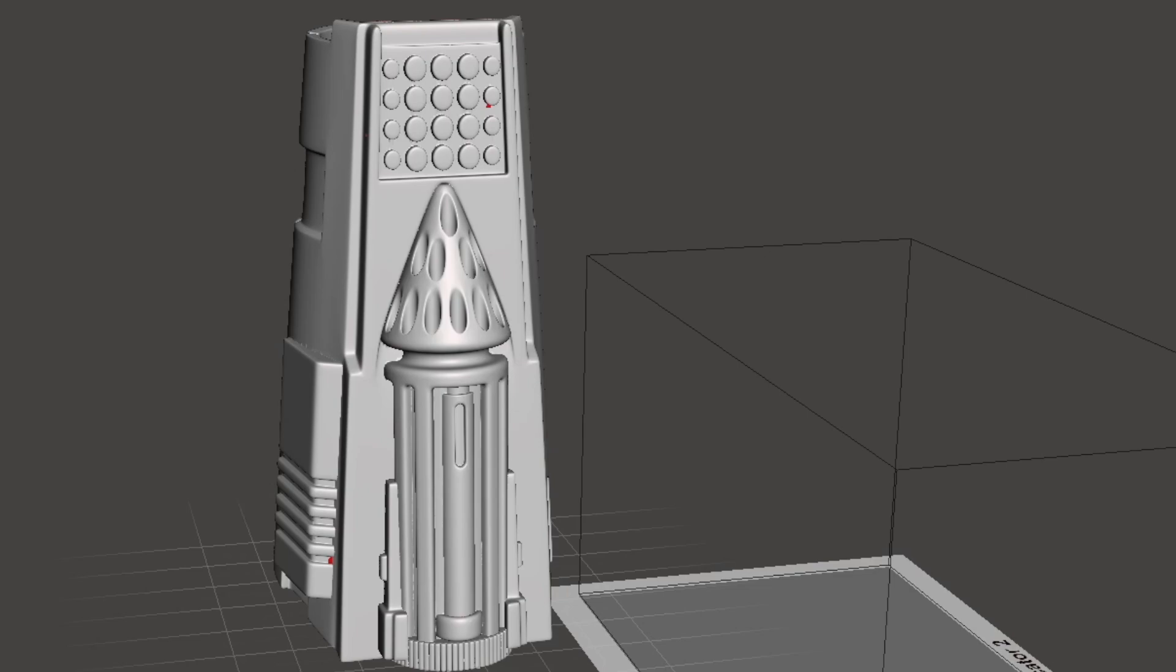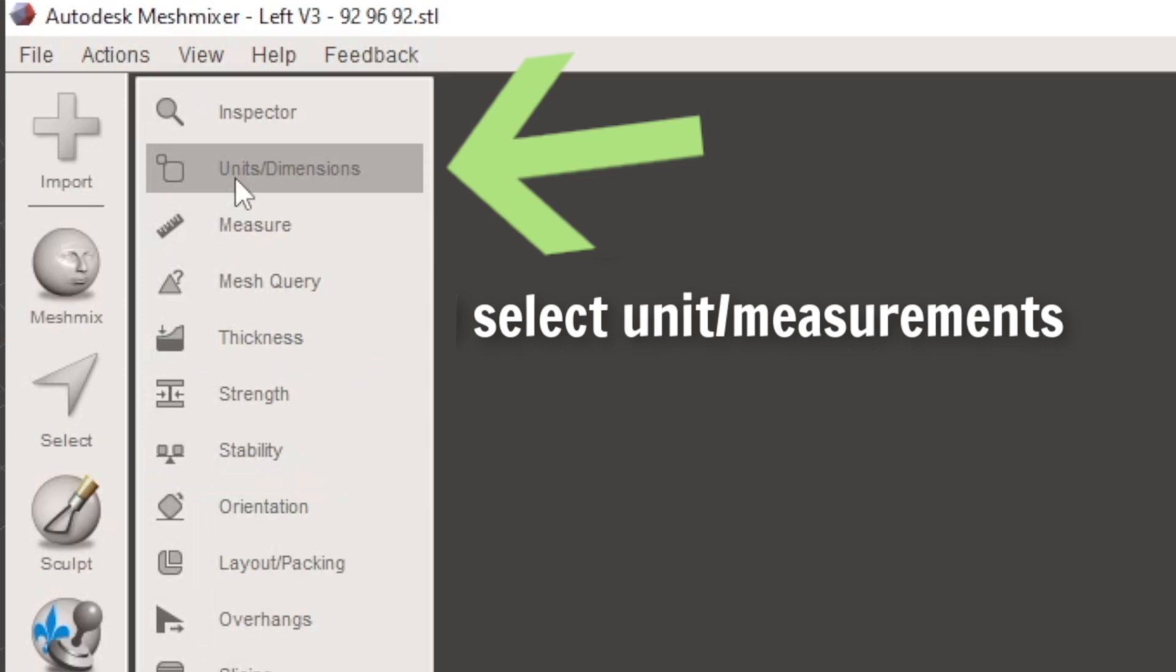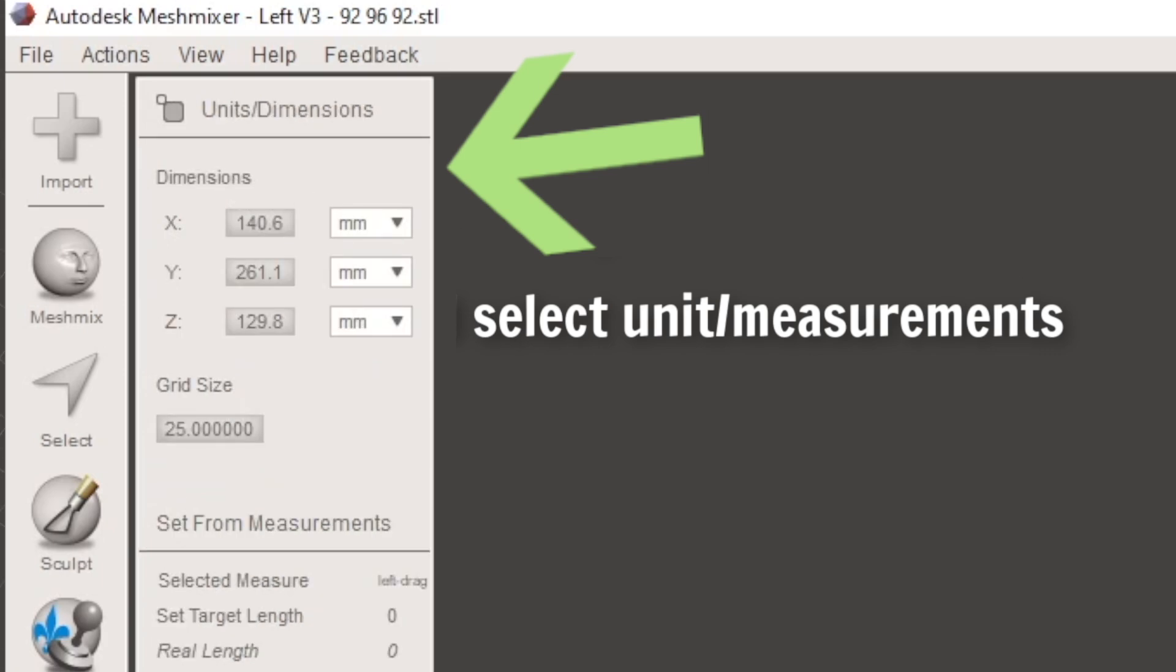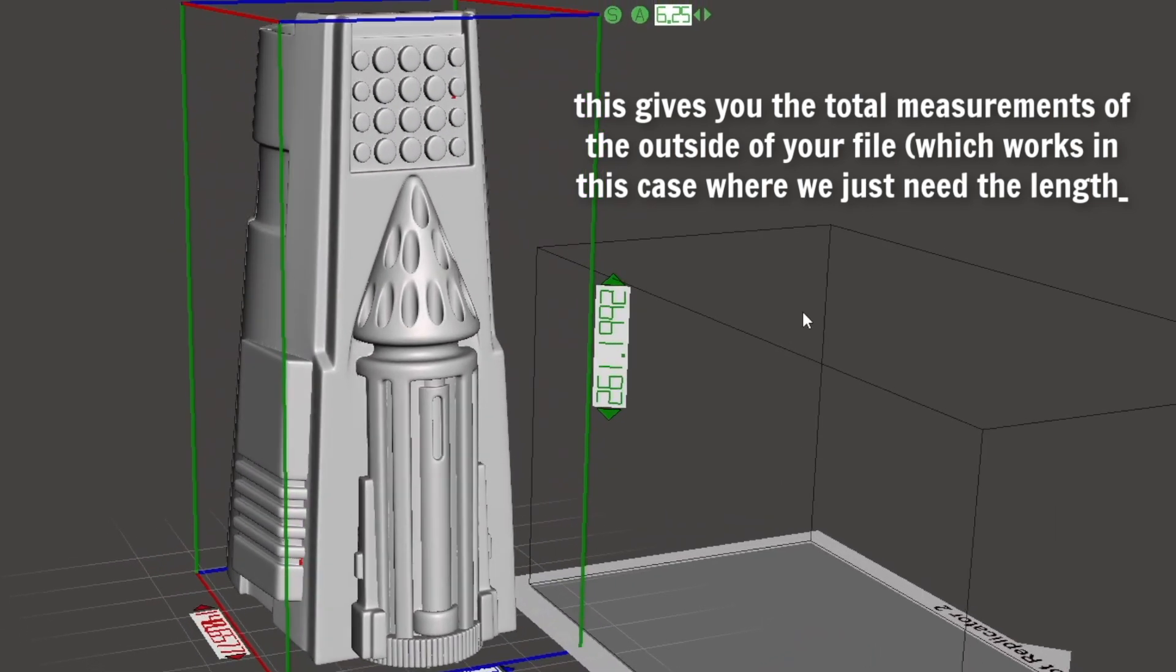The last measurement you'll want to get is the length of your gauntlet and to do that we're just going to go back into the analysis menu and select measure again and just switch the axis to y. Then again you're just going to take that red line and stretch it from the front to back of your model to determine the overall length and compare it to your own measurements.